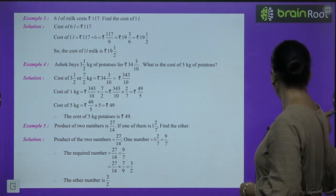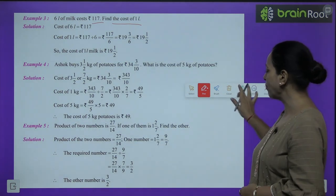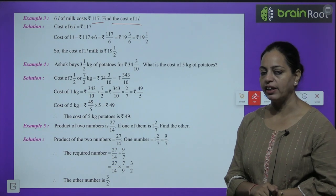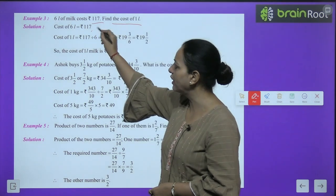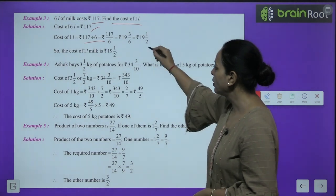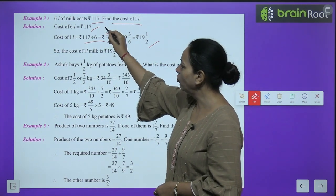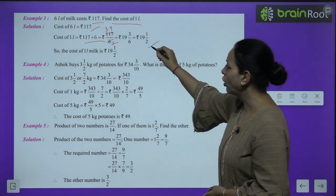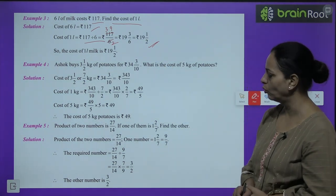Example 3: 6 liters of milk cost ₹117. Find the cost of 1 liter. Cost of 1 liter = 117 ÷ 6. Cancel by 3: 39/2 = 19 whole 1/2 rupees.